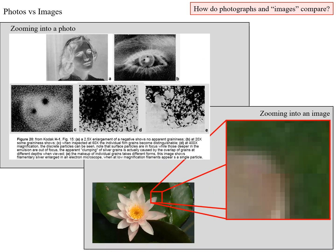Looking at the difference between photos and images visually: in the upper left we're zooming in on a negative image of a woman, zooming in on her eye, then the iris, and then further. At higher magnification levels, you start seeing the individual crystals — they appear ropey and randomly distributed. For a digital image, you have a flower zoomed in until you can see the variability due to individual pixels, which are square, as is the grid of the original sensor.